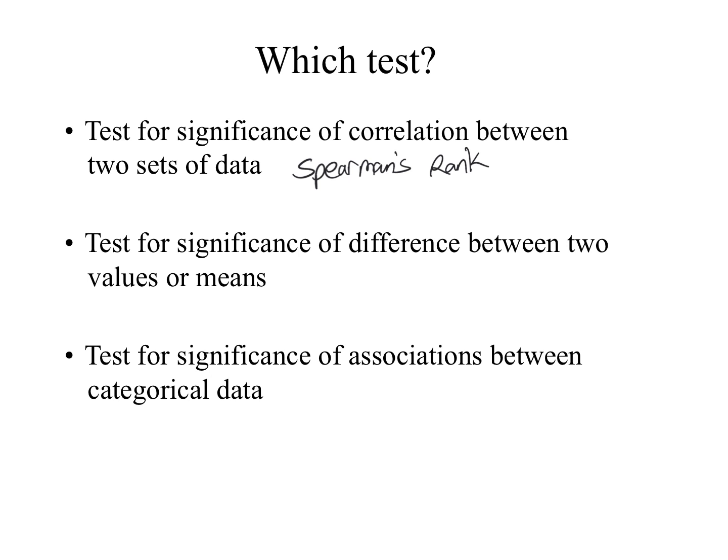The third example looks for the significance of associations between categorical data. If you have a spread of data among different categories, you're trying to identify whether there's a significant reason why one category might have a higher frequency than the others. You calculate a statistical test and compare it with a critical value — this is done using the chi-squared test.